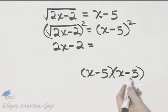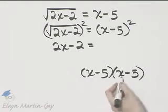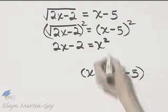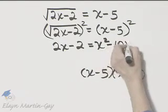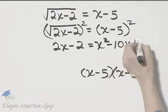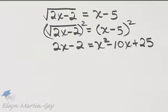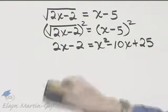It is x minus 5 times x minus 5, so it's x squared minus 5x minus 5x minus 10x plus 25. Be very careful. That's a common mistake there, squaring the binomial incorrectly.